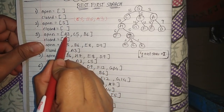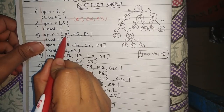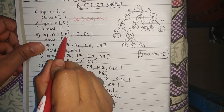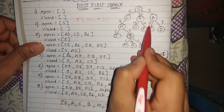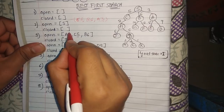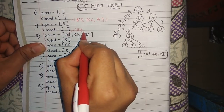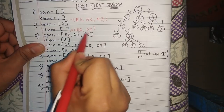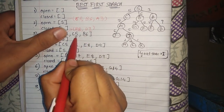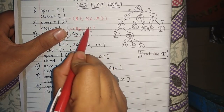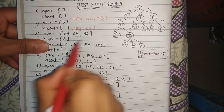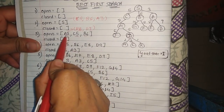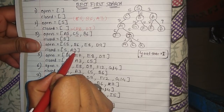Next is a3 — node a with heuristic value 3. A is not the goal state, so we place a into the closed array and expand its children. The children of a are e with heuristic value 8 and d with heuristic value 9. We now sort the remaining open array: c5, b6, e8, d9.